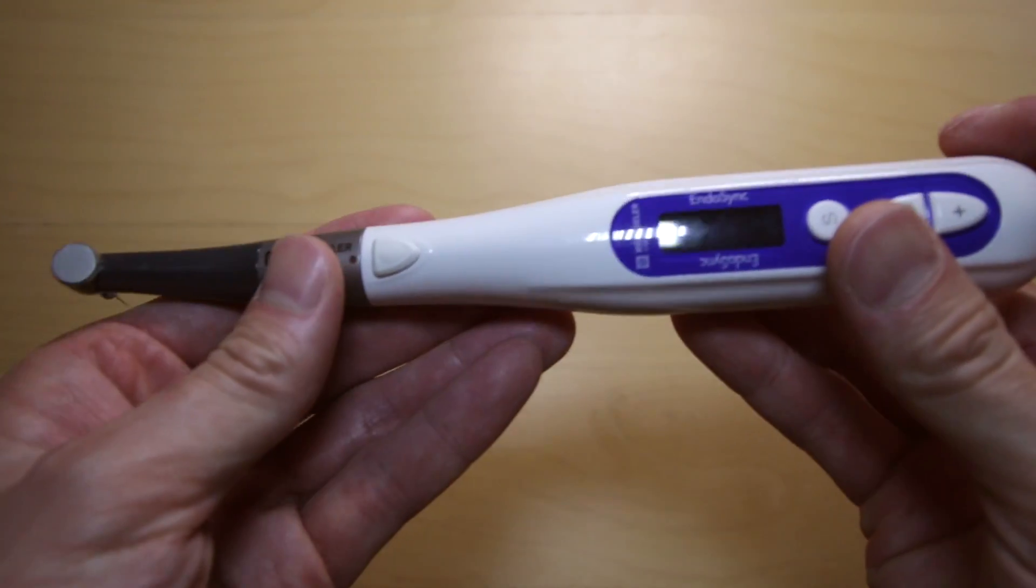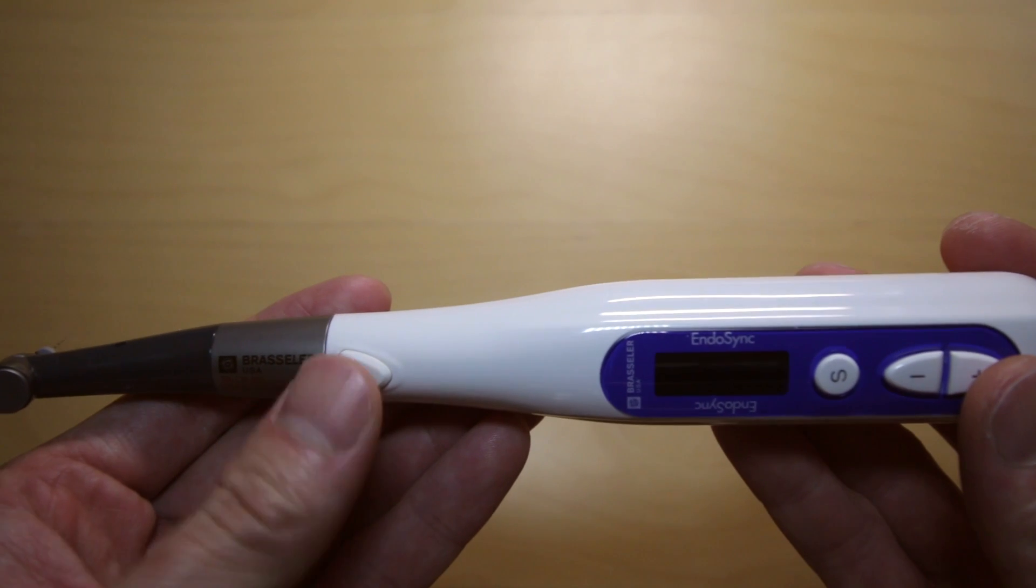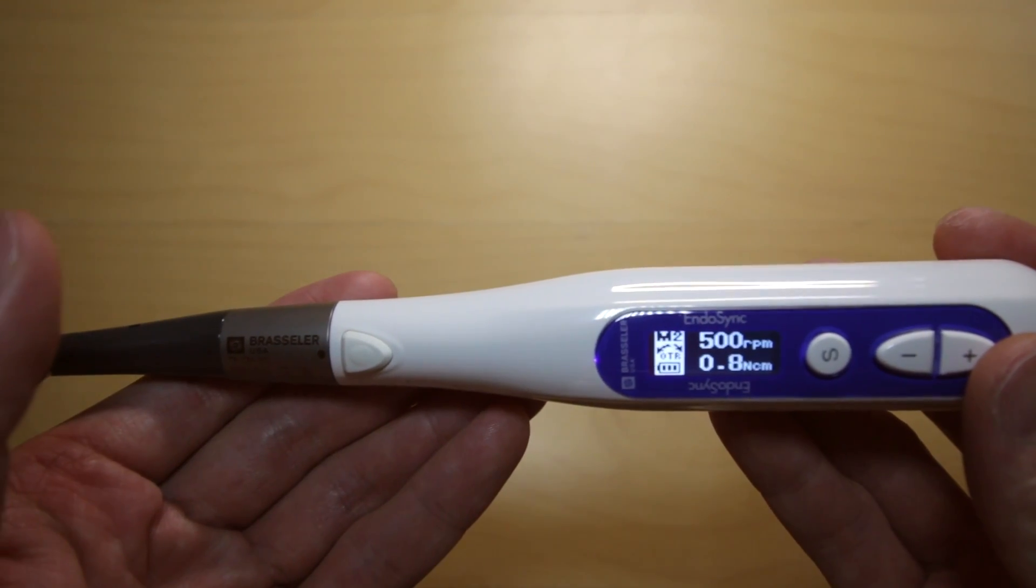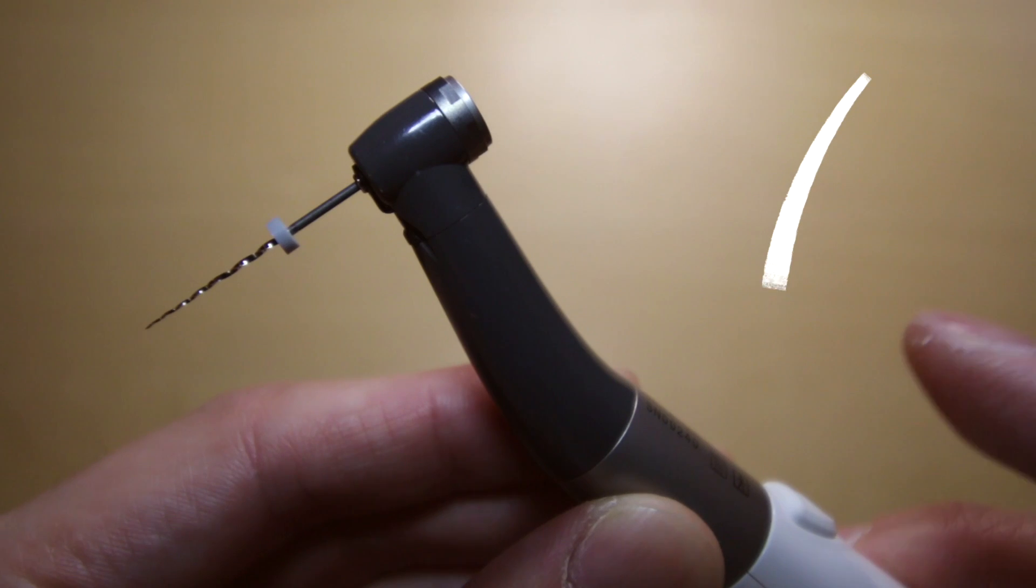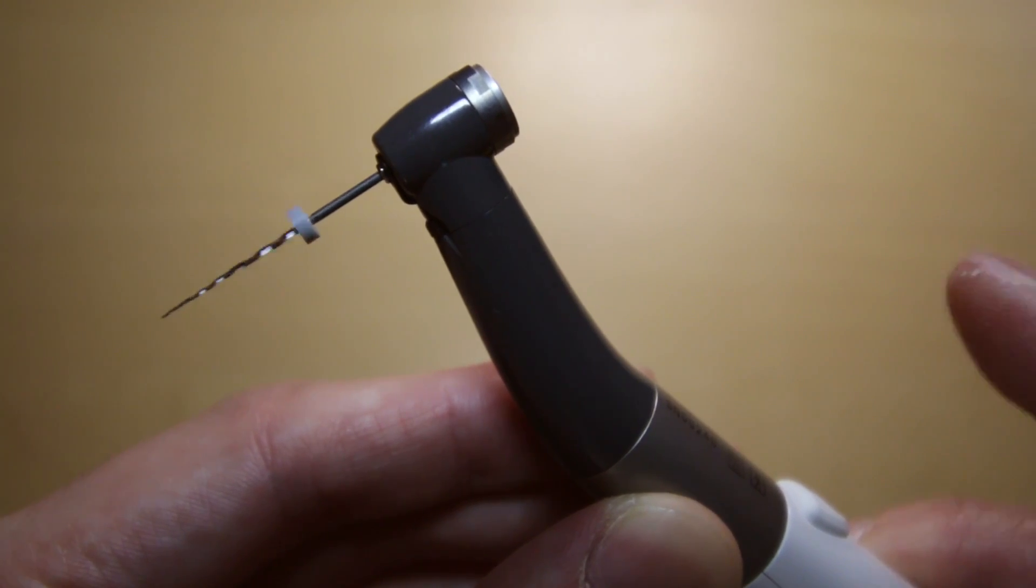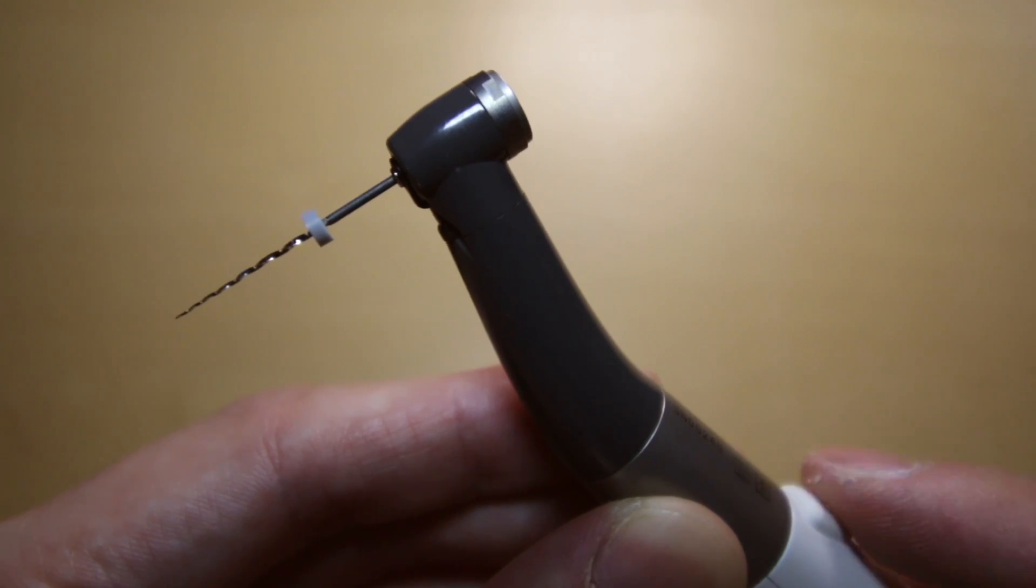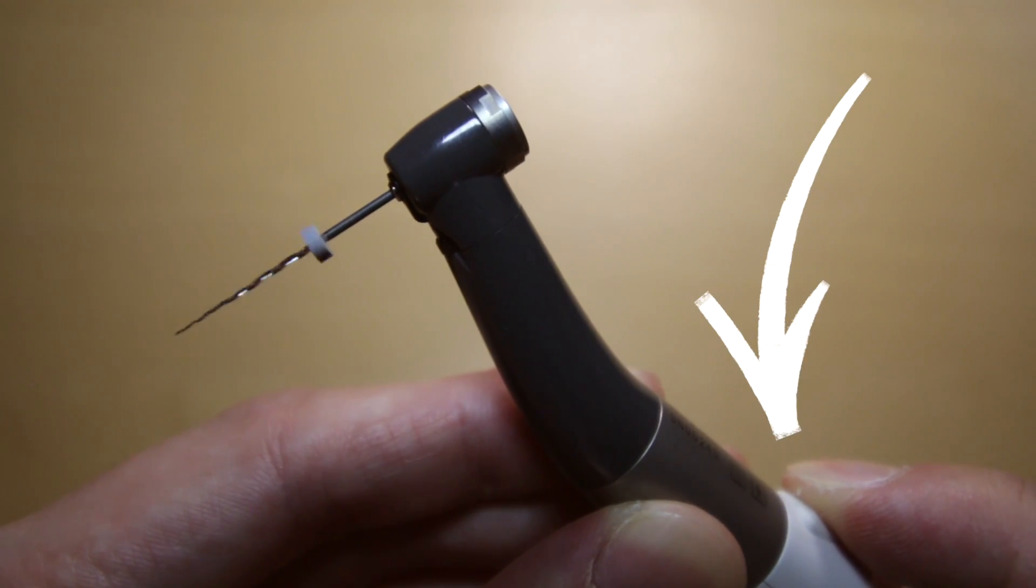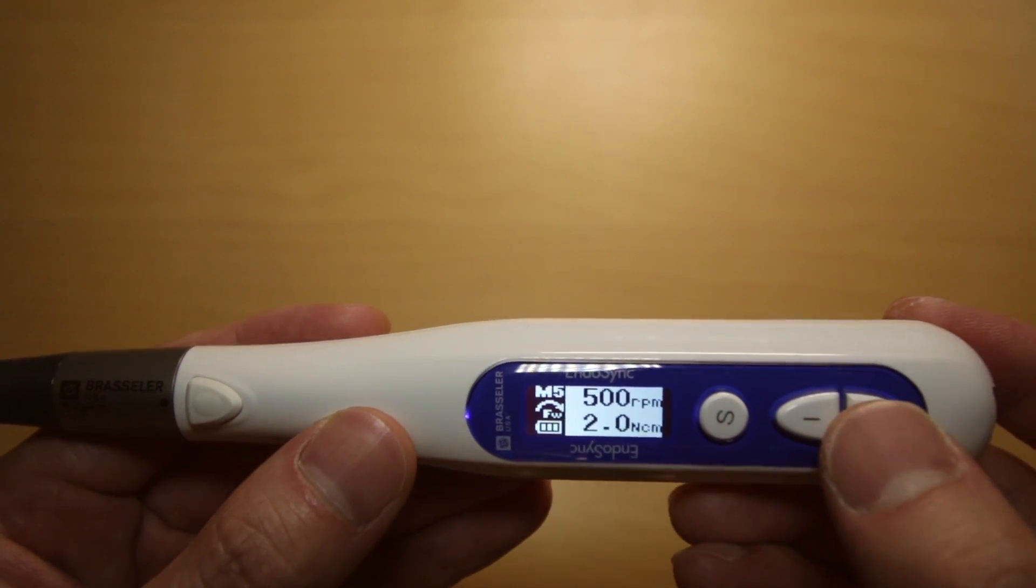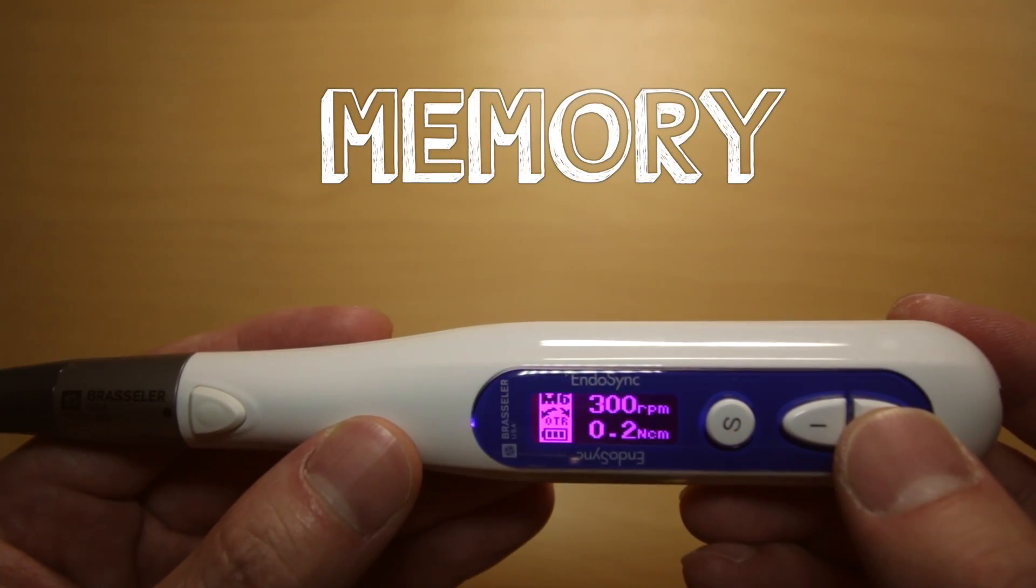The handpiece can also work by itself. You turn it on by pressing this button. Once on, you can activate the motor by pressing that button once more, and you can let go. It'll stop once you press the button again. Now if you long press this time, it'll run continuously until you let go.